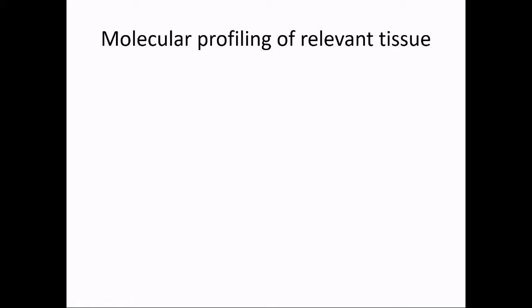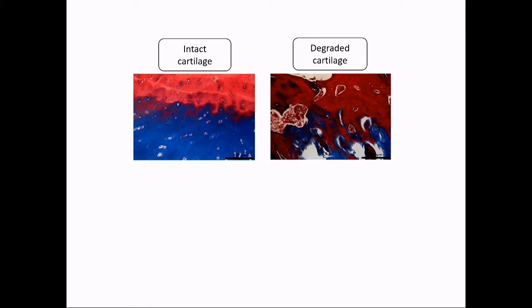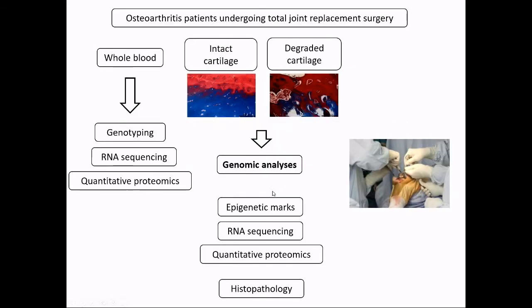Finally, I want to talk about molecular profiling of relevant tissue and how that can help us go from variant to gene to mechanism. Osteoarthritis is one of relatively few common complex diseases where access to the relevant tissue is very much possible at the point of joint replacement surgery. We have been collecting knees of individuals undergoing replacement for osteoarthritis, taking two sections — one from macroscopically healthy cartilage and one from degraded cartilage. We're collecting a few hundred of those, in addition to synovial tissue, and deploying multi-omic analyses across different levels.